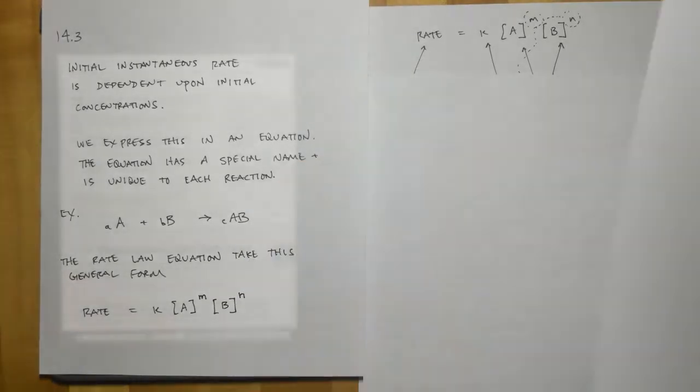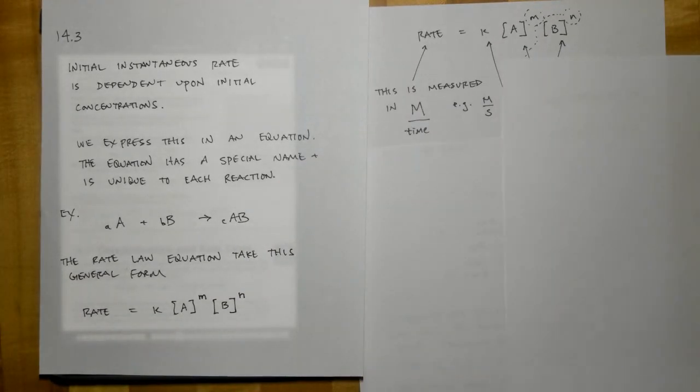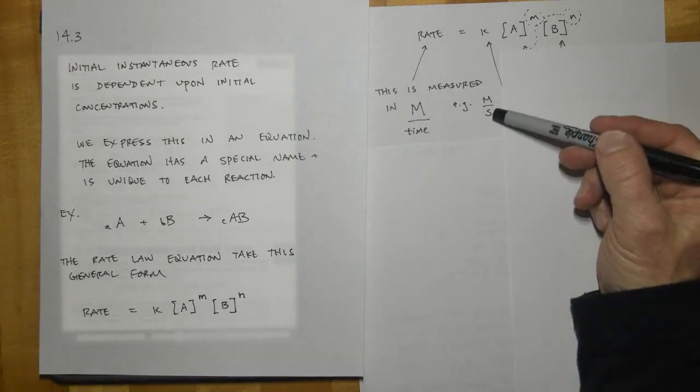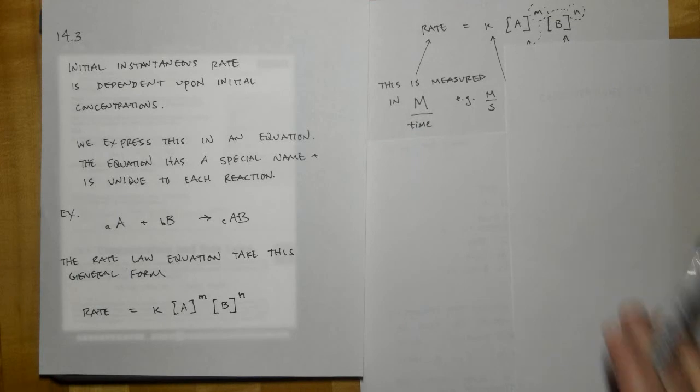But first, the word rate. So rate is measured in concentration per unit time. For example, molarity per second. As we've talked about before, it could be molarity times seconds to the negative one. It could be moles times liters to the negative one times seconds to the negative one. This is the speed of the reaction. This tells you how fast the reaction will go.